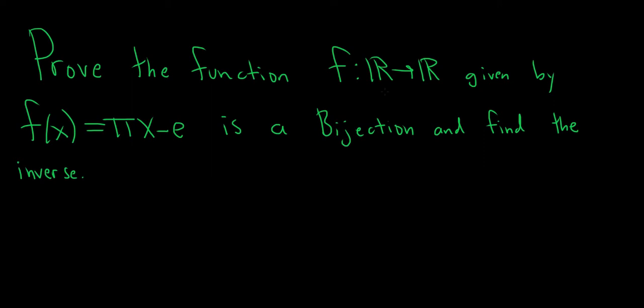Prove the function f from R to R given by f(x) = πx - e is a bijection and find the inverse.